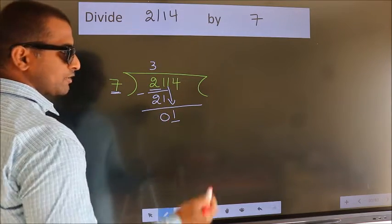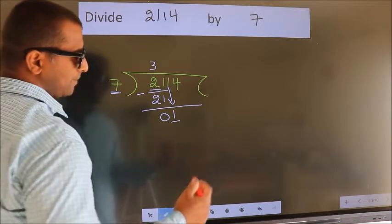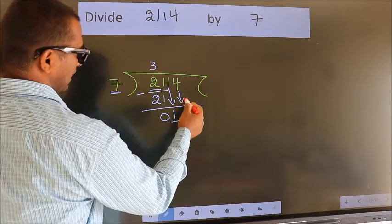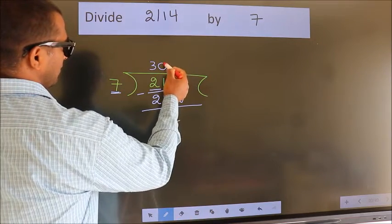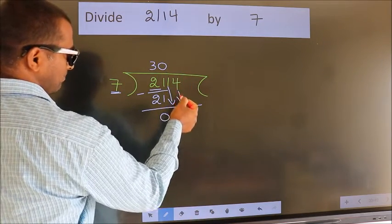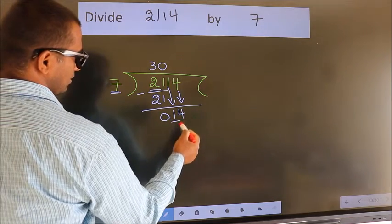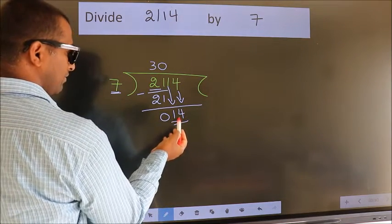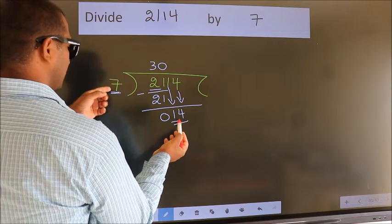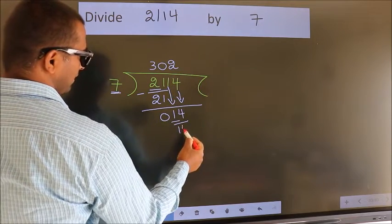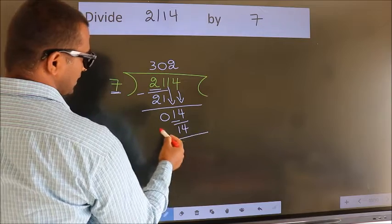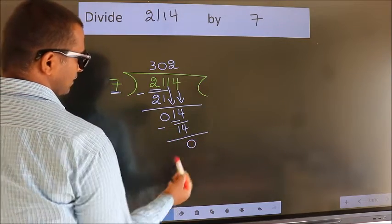So we should bring down the second number. And the rule to bring down the second number is put 0 here. Then only we can bring down this number. So, 14. When do we get 14? In the 7 table. 7 twos, 14. Now we subtract. We get 0.